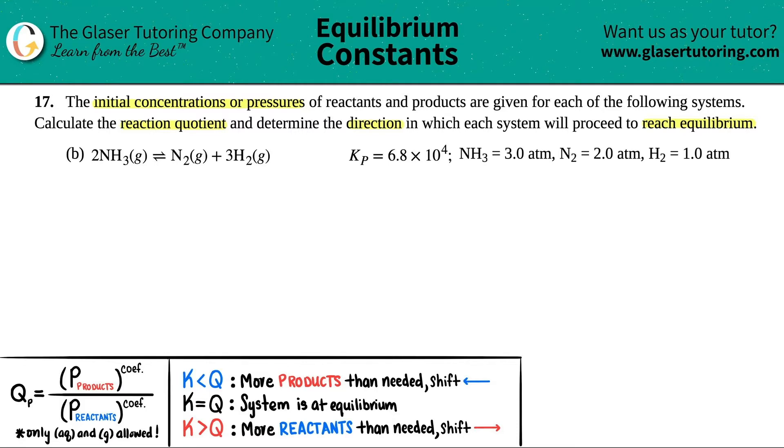The first thing is I'm going to rewrite it nice and big. We have 2NH₃ and that's a gas. This comes to equilibrium because I see it as a double arrow with N₂, and that's a gas, plus 3H₂, and that's also a gas. They already put coefficients here so I'm going to assume that it's balanced.